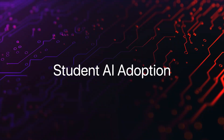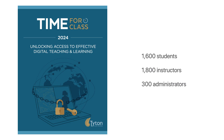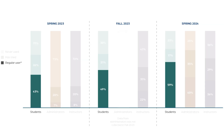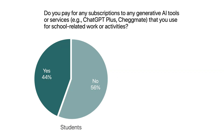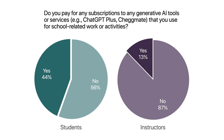But first, let's look at some stats from the recent Time for Class 2024 report on student usage of AI tools. They found that 59% of students are already using these tools regularly, which is quite a bit higher than instructors. And almost half of these students are paying for subscriptions to use advanced models like ChatGPT+. Students are much more likely to pay for these models compared to their instructors, where only 13% have a subscription.